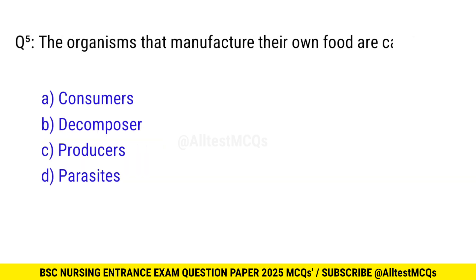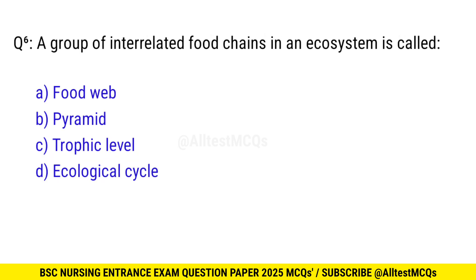Question No. 5: The organisms that manufacture their own food are called? The right option is C: Producers. Question No. 6: A group of interrelated food chains in an ecosystem is called? The right option is A: Food web.